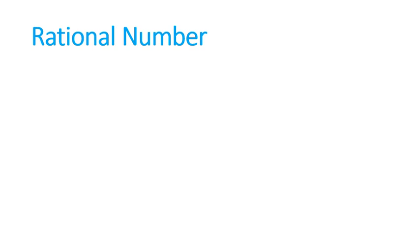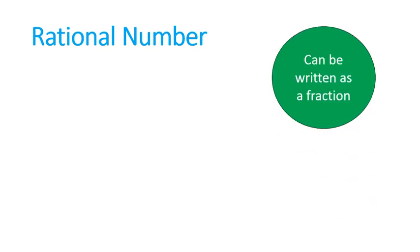First off, let's talk about rational numbers. What are rational numbers? Rational numbers are numbers that can be written as a fraction.